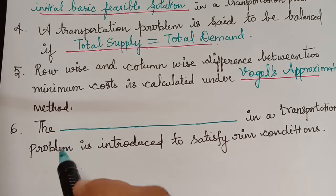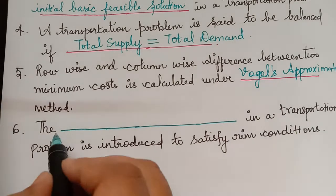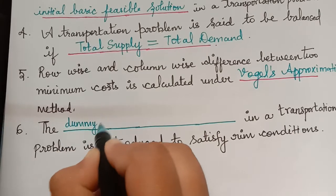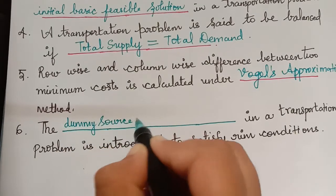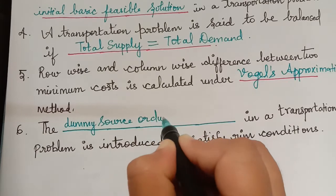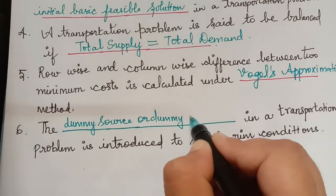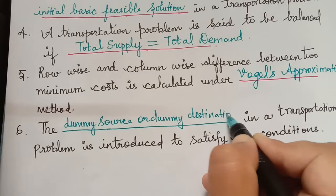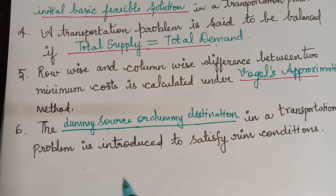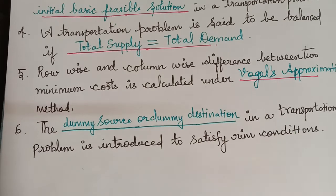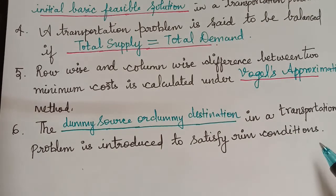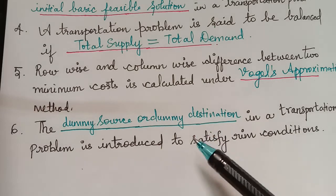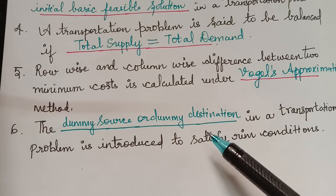Therefore, the answer is dummy source or dummy destination. In a transportation problem, a dummy source or dummy destination is introduced to satisfy the rim conditions when total supply and total demand are not equal.